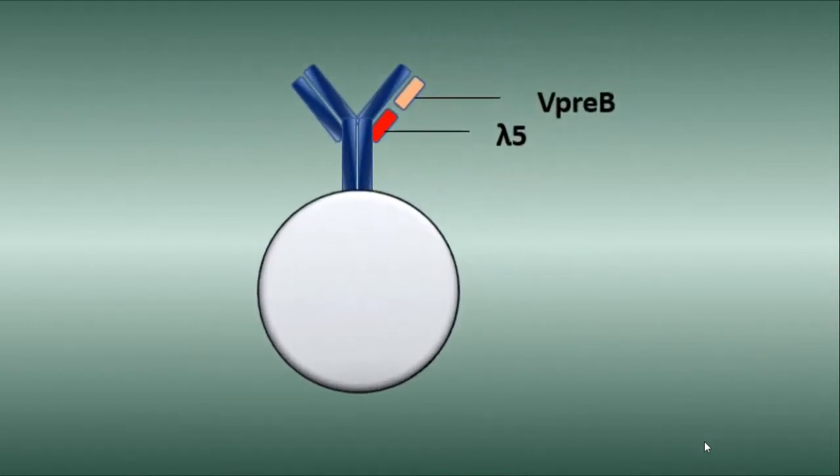While the heavy chain is being arranged, at a certain point, it uses surrogate light chains. For the variable region, it uses V pre-B, and for the constant region, it uses lambda 5.